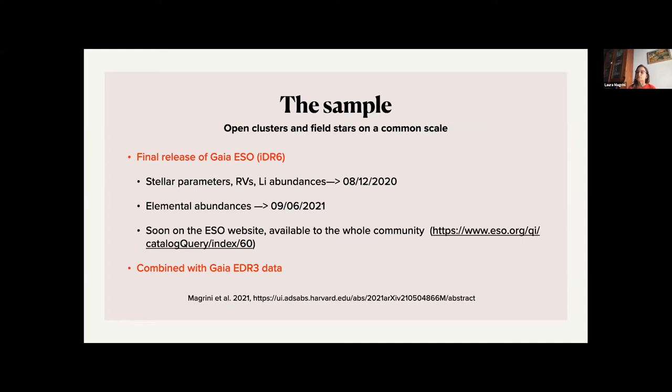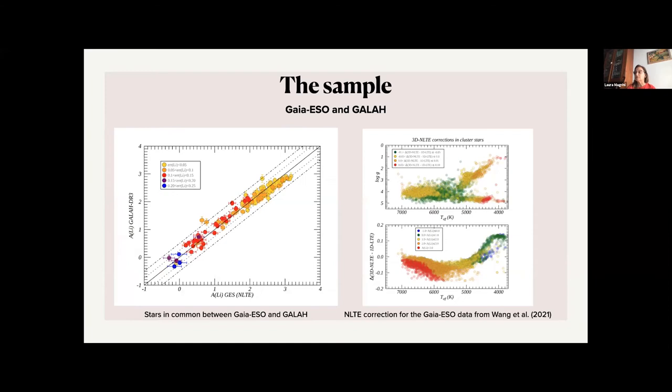Everything has been combined with Gaia to get distances and luminosity, and from them, ages and masses also for the field stars. The first important check we have done is a comparison with GALAH, since Gaia-ESO and GALAH are the two large spectroscopic surveys which measured lithium. So it's important to be sure that we are on the same scale, and to do that, we have corrected the Gaia-ESO abundances of lithium for the 3D, non-LTE effect, using the grid of correction of Ella Wong.